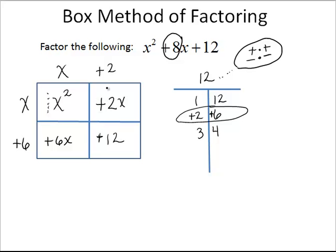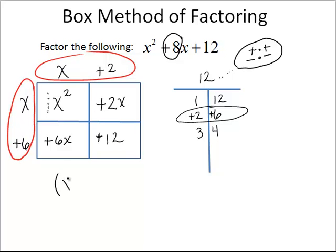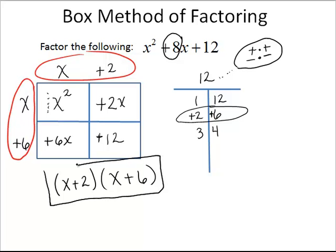Now we have our factors. Our factors can be written as x plus 2 times x plus 6. You can check this by doing the FOIL method, and you will see that you obtain x squared plus 8x plus 12. So we've factored the given polynomial using the box method of factoring.